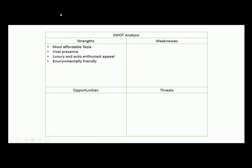The strengths filled into the chart include: it's the most affordable Tesla, Tesla has a viral presence around its products and is associated with innovation, it's a luxury car with relatively high performance appealing to auto enthusiasts, and it's an electric vehicle — environmentally friendly and not dependent on gasoline. These are assumptions that will be confirmed when we look at the industry analysis.